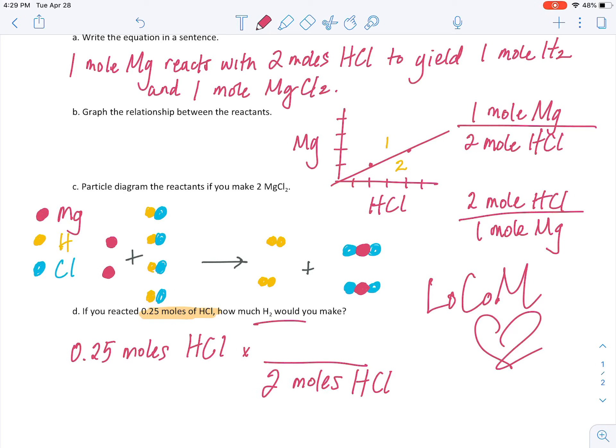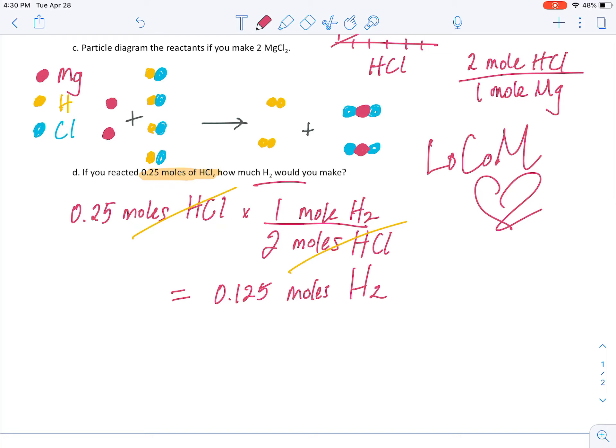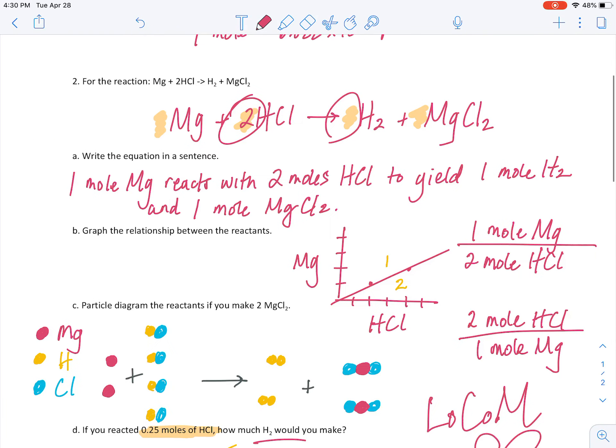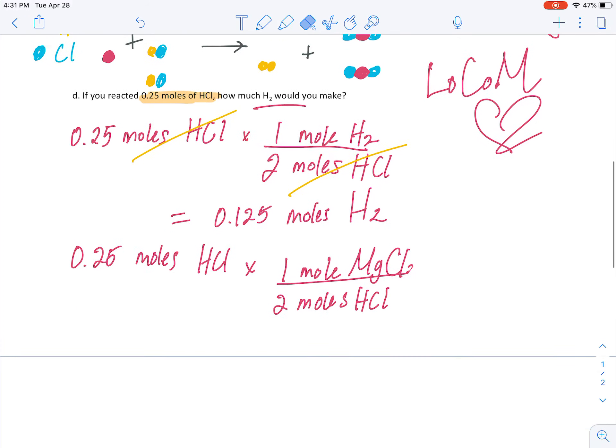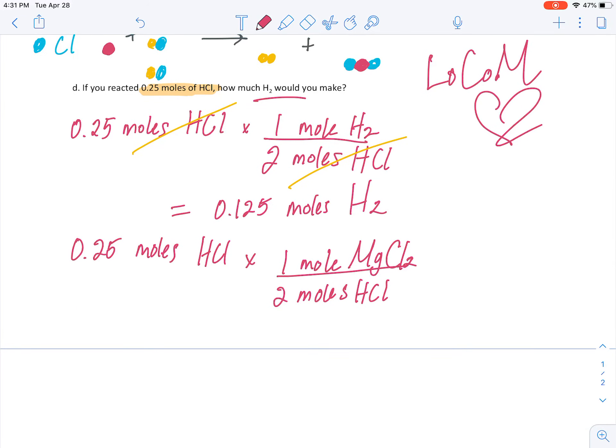And, that's it. Now, we could do that for the moles of magnesium chloride. I'll do that real quick. So, here, the ratio would just change, because instead of hydrogen gas, we know for every two moles of HCl, we are producing one mole of magnesium chloride. So, again, you're going to end up with the same answer, because that ratio of moles is the same.